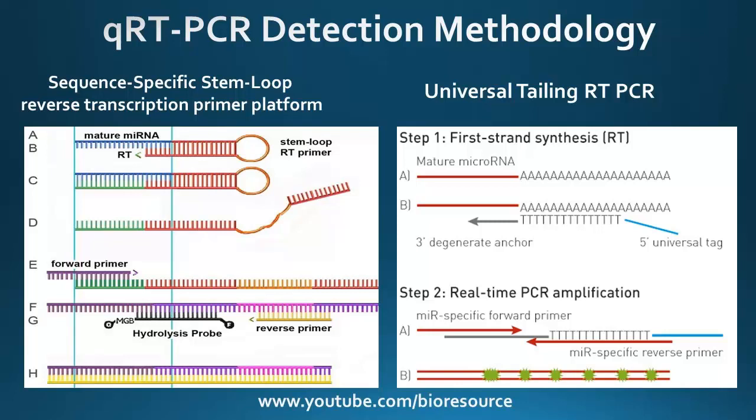The other approach is the universal tailing RT-PCR. In this case, the mature miRNA is polyadenylated — poly-A strings are added — and a universal T primer or universal tag is used for complementary DNA synthesis. Once this is done, SYBR Green chemistry can be used along with specific primers for the miRNA for detection.